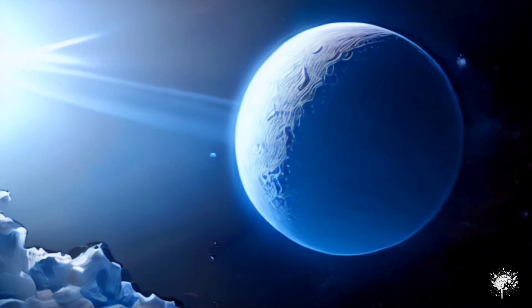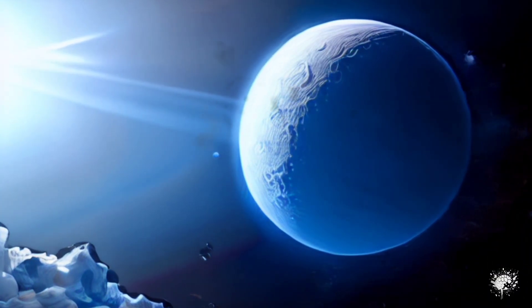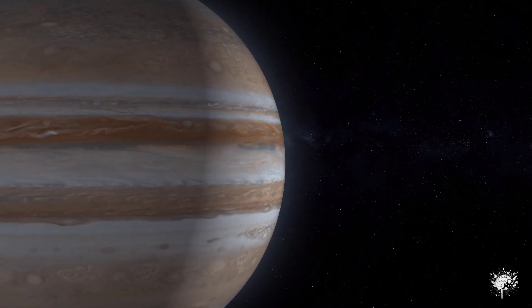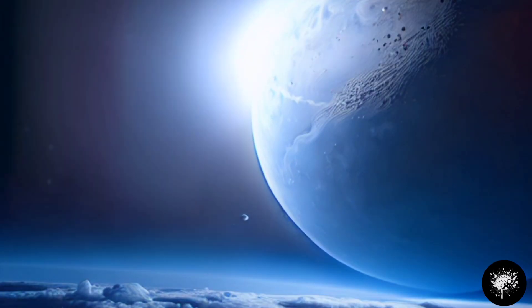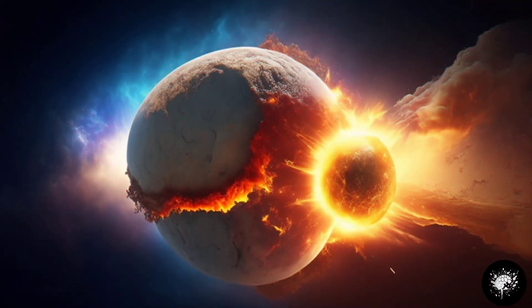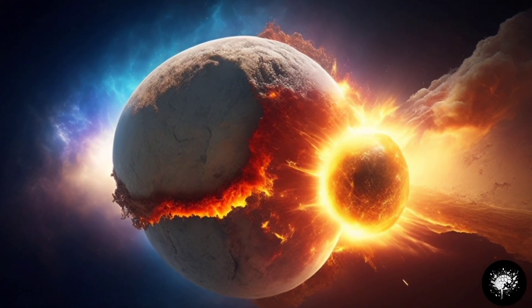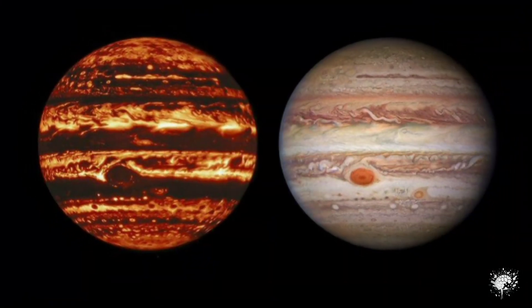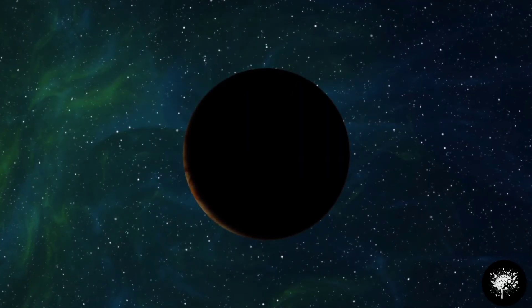Scientists claim that the colliding planet was entirely covered in ice and struck Jupiter at a speed of 46 kilometers per second. Due to its size and icy composition, the planet managed to penetrate Jupiter's surface, merging with its core in the process. Jupiter was essentially reborn, but the other planet vanished without a trace.